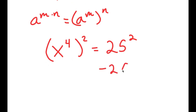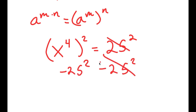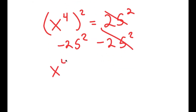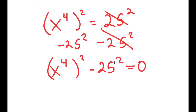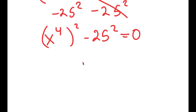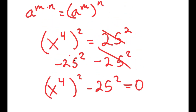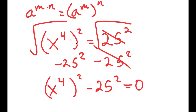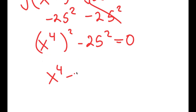Now I'm going to subtract 25² on both sides. These two cancel out and I get (x⁴)² - 25² = 0. And before we actually proceed, I'm going to take the square root on both sides to cancel those squares out, so I get x⁴ - 25 = 0.